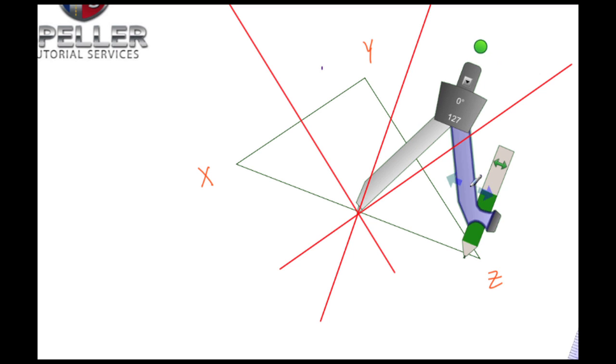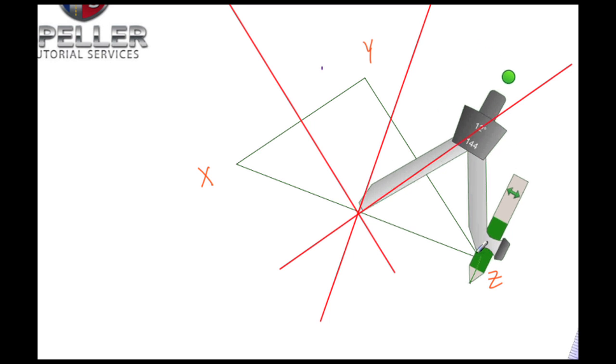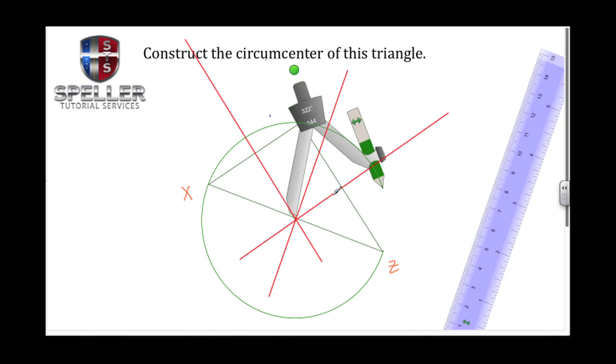What that's going to do is create a radius. Now with that radius, I can draw a circle and that circle is going to circumscribe the triangle that we've been working on.